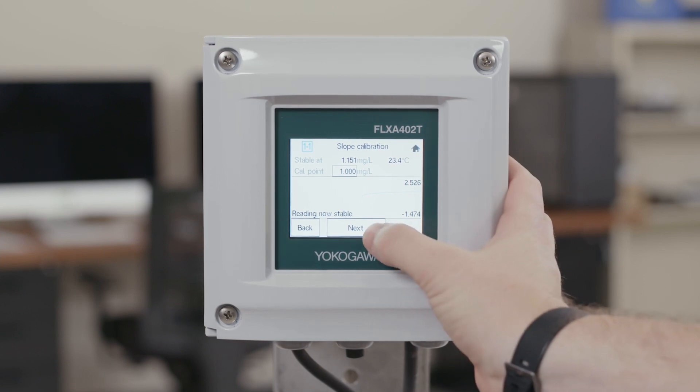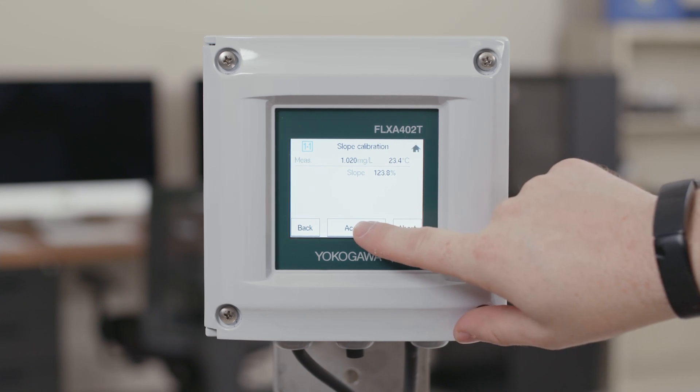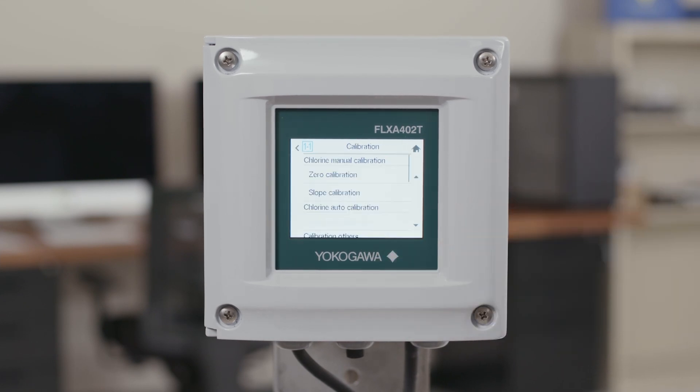Once you've done this you go ahead and click next and it'll calculate the slope and go to the next screen where it will show you your new current measurement value as well as your new slope. If this value looks right then go ahead and hit accept. If not you can try the calibration again or cancel the calibration. Once you hit accept this actually saves the calibration data into the analyzer and you're good to start your measurement again.